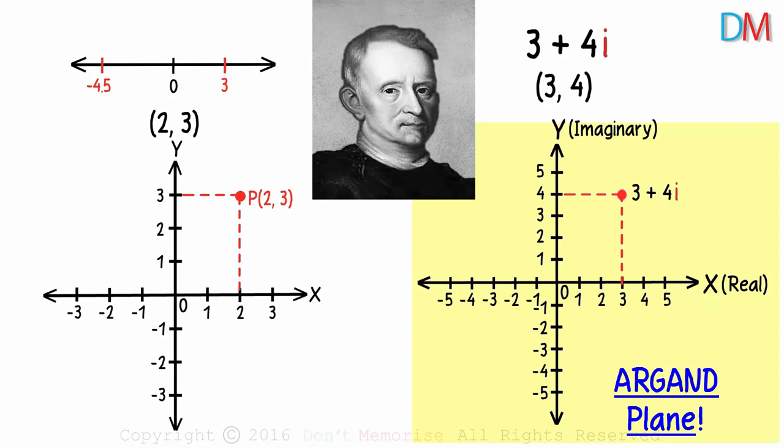It was Jean Robert Argand who is credited with development and elaboration on geometric representation of complex numbers and operations upon them. This assured him a place in history of mathematics by calling his representation of complex numbers on a plane as Argand plane.